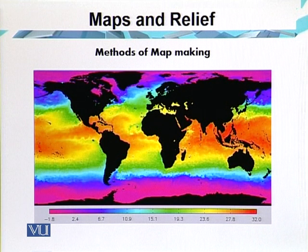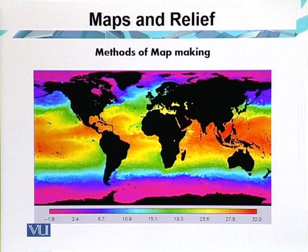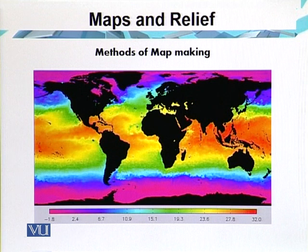On topographical survey maps, every point on the map bears a true relationship with corresponding points on the ground. This map shows the temperature of sea water, and it is made by the process of satellite technology.